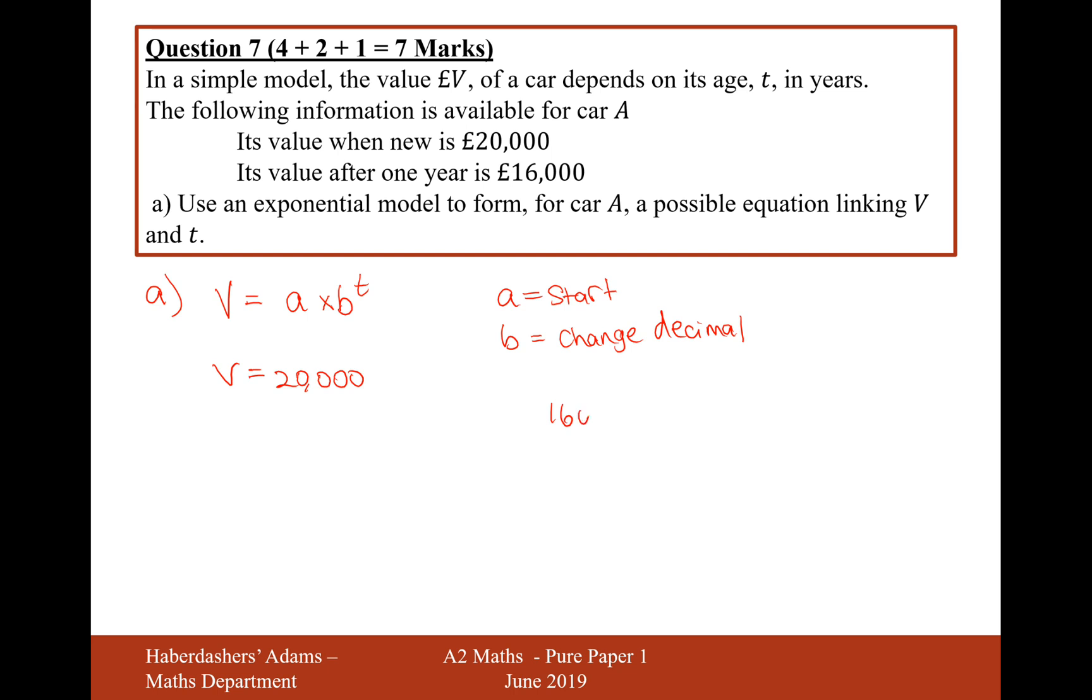So it's going to be £16,000 divided by £20,000. If I do that on my calculator, £16,000 divided by £20,000, I get 4 over 5, or 0.8. So 0.8 is going to be the decimal multiplier for my car.